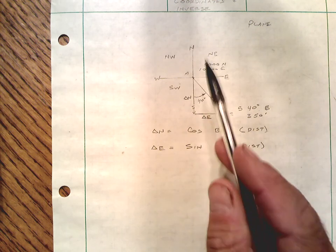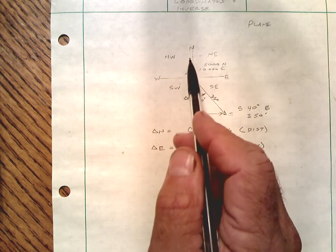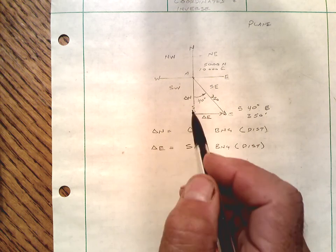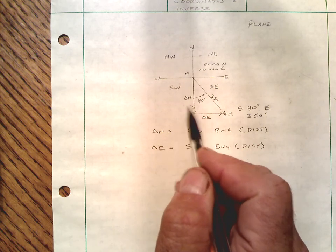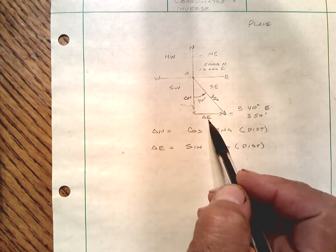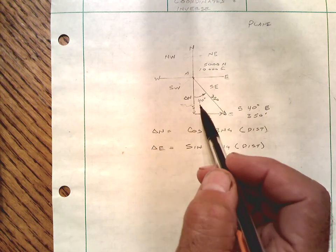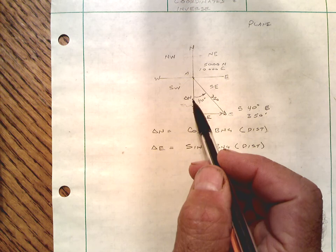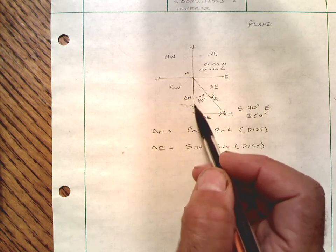Bearings of course are measured either from the north or from the south to the direction of the line. So in this example we have a south east bearing 40 degrees so the 40 degree angle is measured from the south.